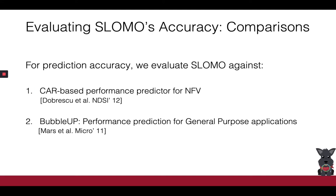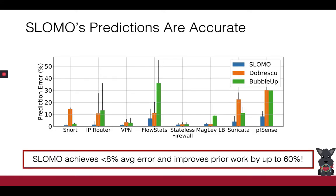Now let us present some brief evaluation results. To evaluate SlowMo's accuracy, we compared its predictions with two prior works. The first predictor by Dobrescu et al. focused on building a cache access rate-based model, whereas BubbleUp, a prior work by Mars et al., predicts performance as a function of the working set size of the competitors. In this graph, we plot the prediction error of SlowMo alongside the two prior works for a variety of experiments for each NF. We observe that SlowMo achieves an average error of less than 8% and outperforms prior work by up to 60%.